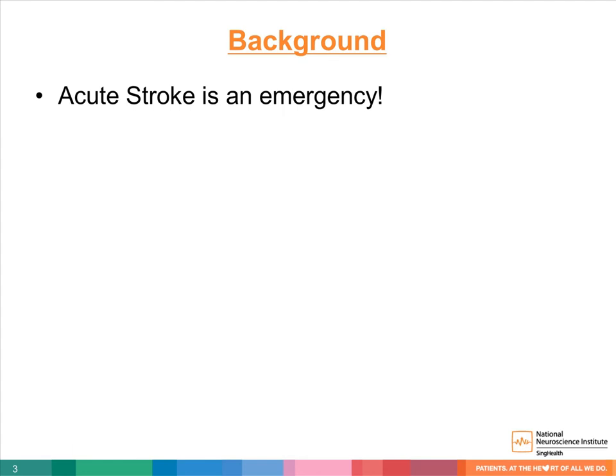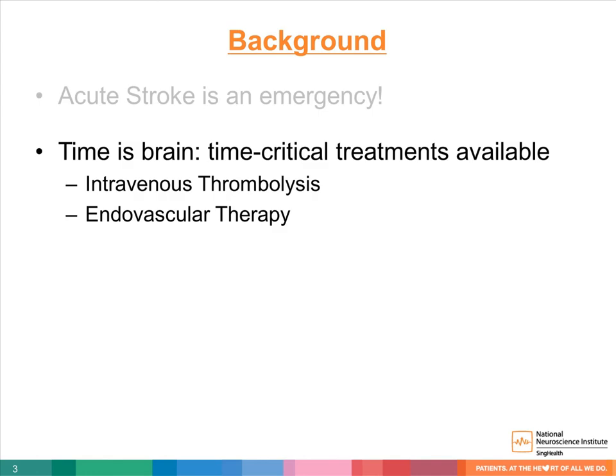Acute stroke is an emergency. Treatments are available emergently and must be instituted early for good outcomes. There are two major subtypes of strokes, with ischemic stroke as the most common — approximately 80% of all strokes are ischemic in nature. Time is brain: every minute of untreated ischemic stroke results in the death of 2 million brain cells. Treatment options such as intravenous thrombolysis and endovascular therapy are available for ischemic stroke.